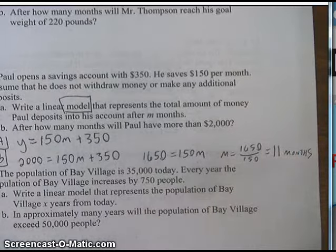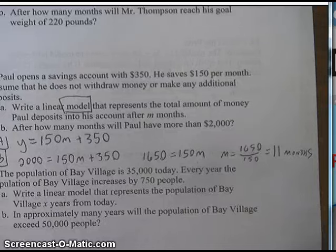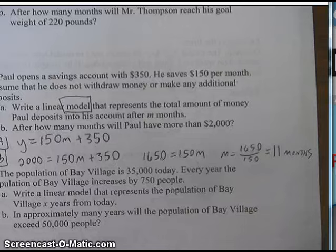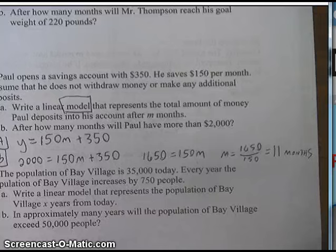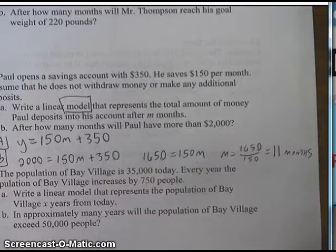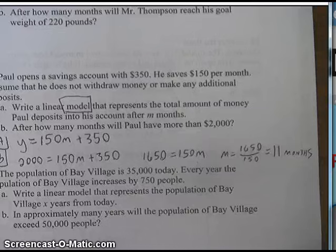But be careful with what the question's asking you. Because it says, after how many months will Paul have more than $2,000? So we know that he'll have $2,000 in 11 months. So he'll have more than $2,000 in more than 11 months. So you could write more than 11 months or 12 months, whichever you prefer. And that's it. That's what we covered in class on the 27th and 28th of August. Thank you for watching this video. I hope it was useful. Thank you, and I'll see you on the next one.